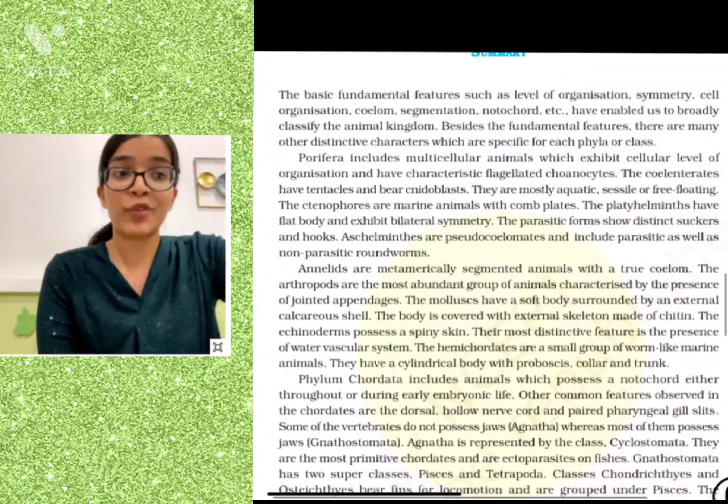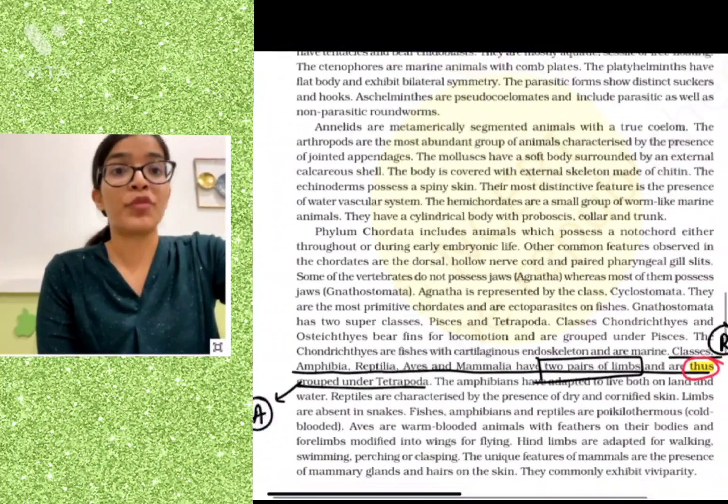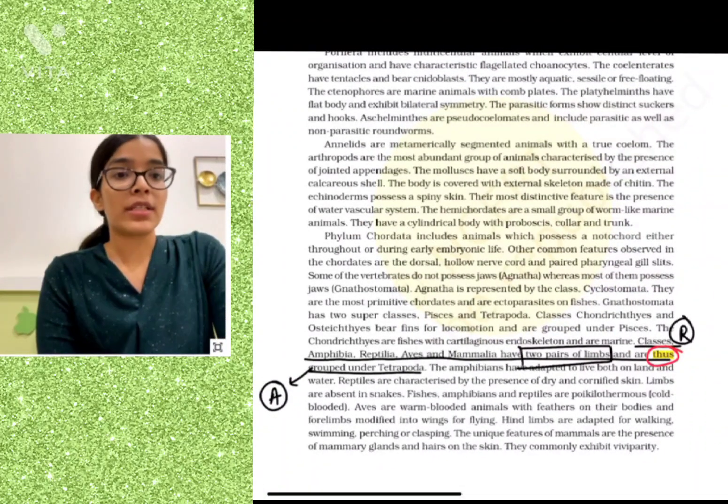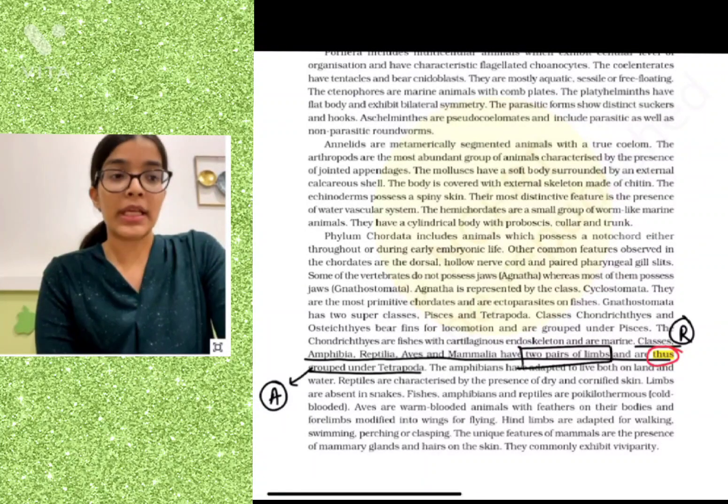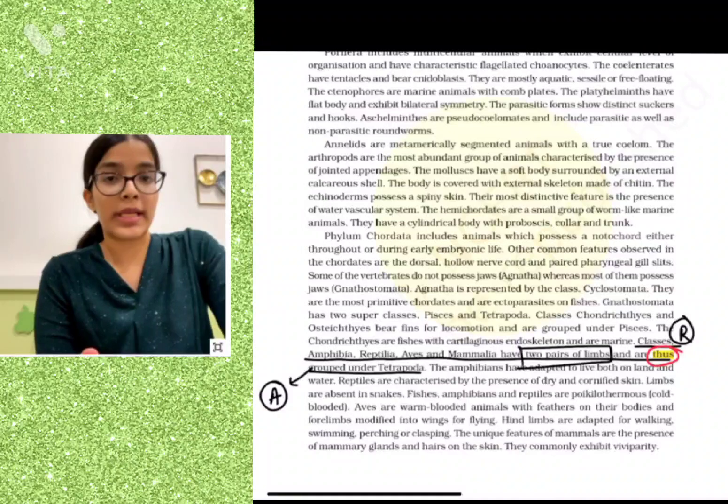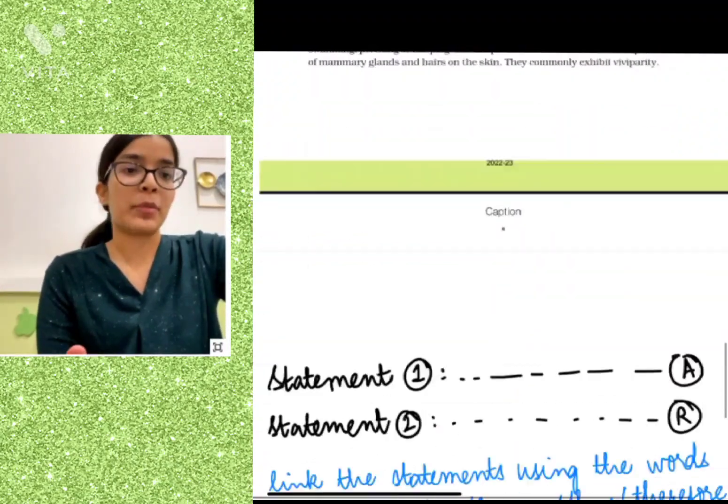Do not make the mistake of ignoring the questions that can be formed from every line of the summary as well. Here is a simple assertion-reason question from the summary: Amphibia, Reptilia, Aves, and Mammalia are grouped under Tetrapoda - that is the assertion. Your reason then becomes that they have two pairs of limbs. This was a pretty simple one.